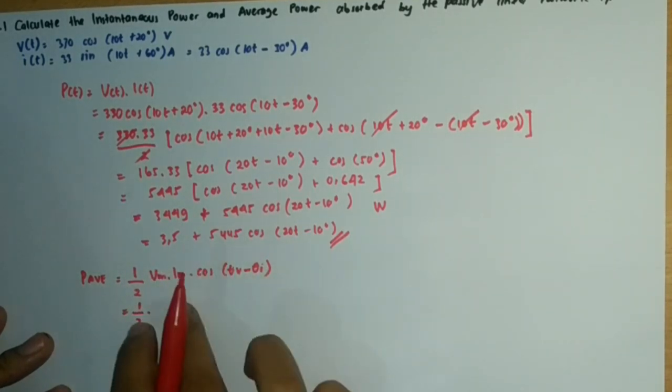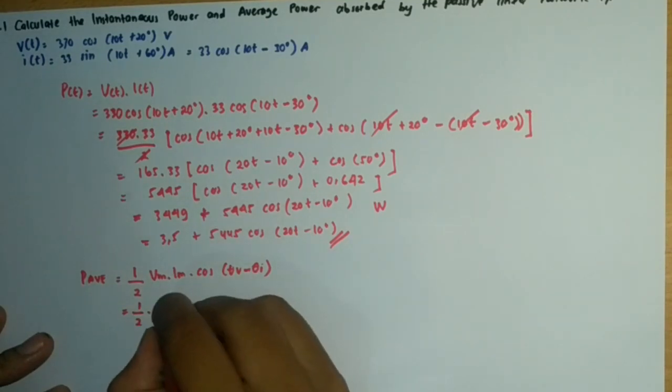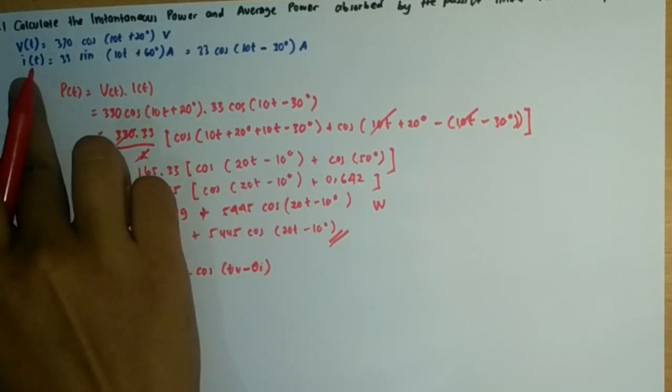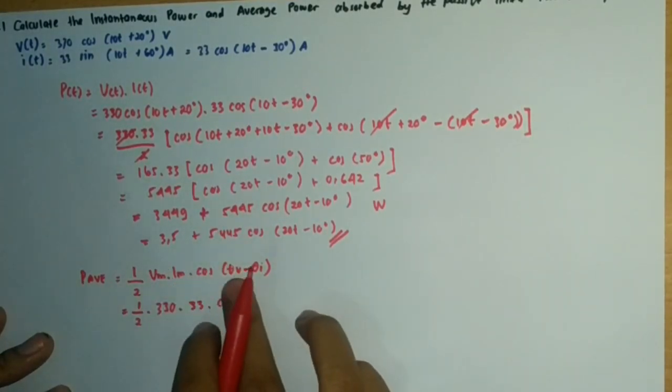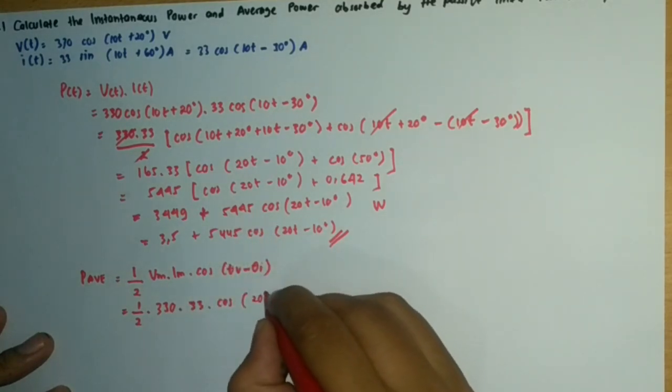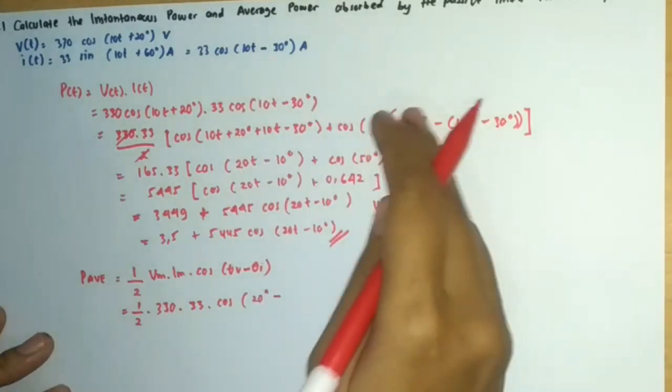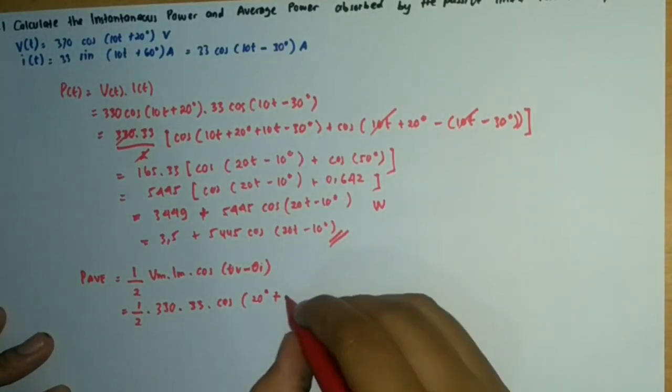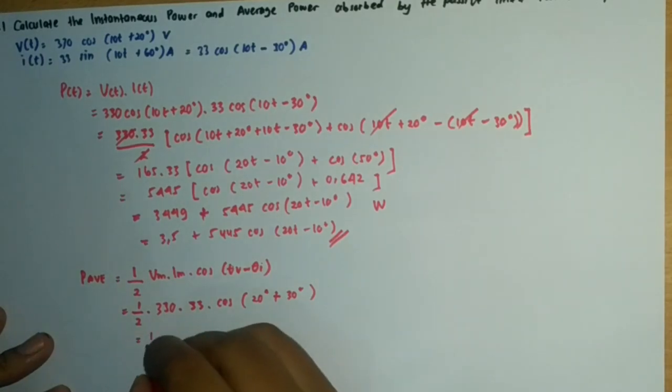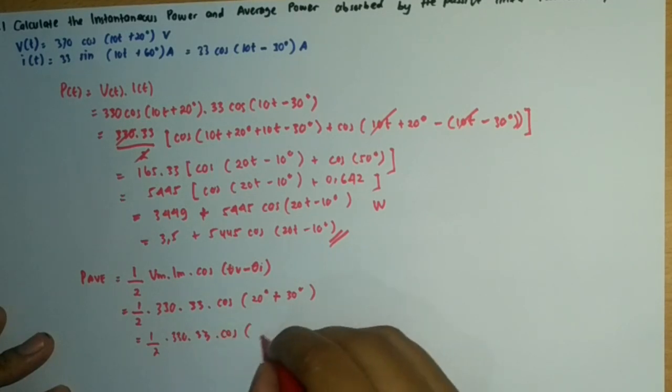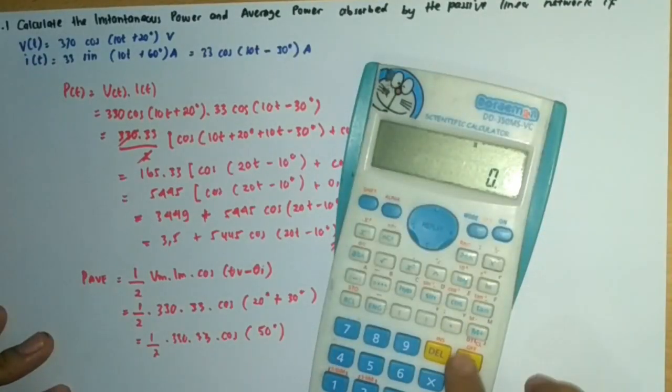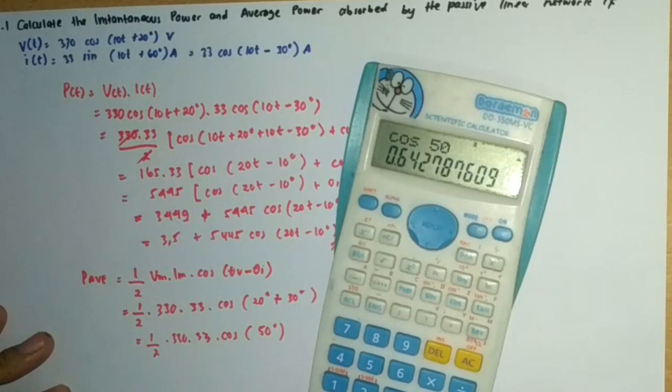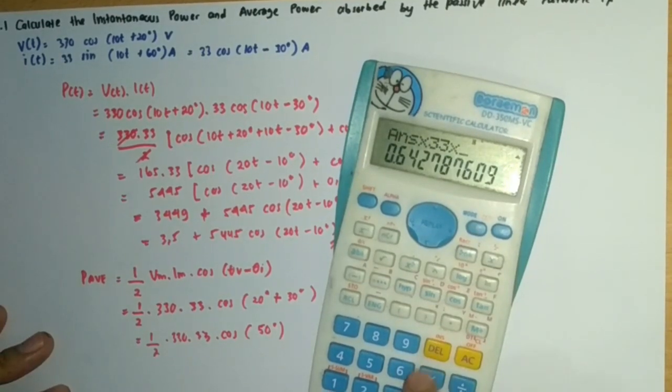Going back to the equation: (1/2) times V_max, which is 330, times I_max, which is 33, times cos(θ_V - θ_I). θ_V is 20 degrees, and θ_I is -30 degrees, so we have 20° - (-30°) = 50°.